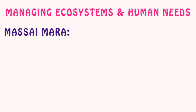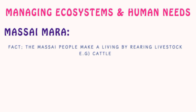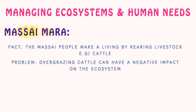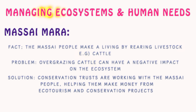The Maasai Mara is a conservation site in Kenya. The Maasai people make a living by rearing livestock; however, overgrazing cattle can have a negative impact on the ecosystem. The solution being pursued is that conservation trusts are working with the Maasai people, helping them make money from ecotourism and conservation projects instead of rearing livestock.